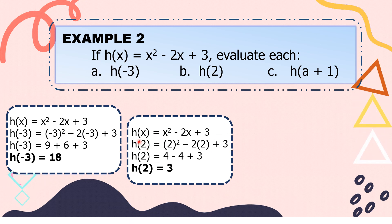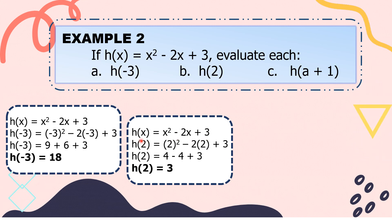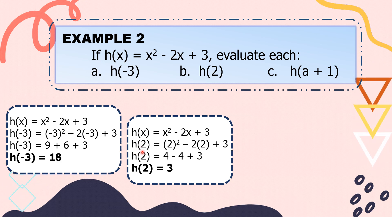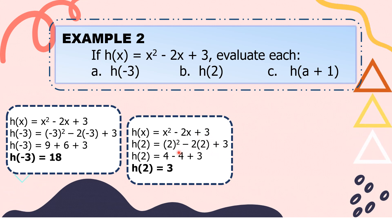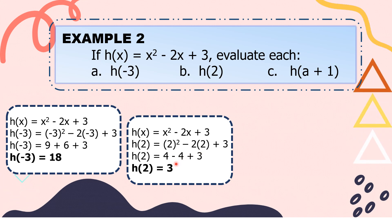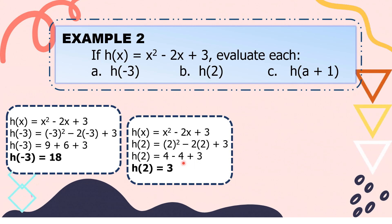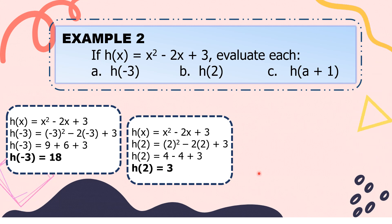For letter B, our function is still h of x equals x squared minus 2x plus 3. We replace all x with positive 2. h of positive 2 equals 2 squared minus 2 times positive 2 plus 3. 2 squared is 4. Negative 2 times positive 2 is negative 4. So, 4 minus 4 is 0, and 0 plus 3 is positive 3. Thus, h of 2 is equal to positive 3.